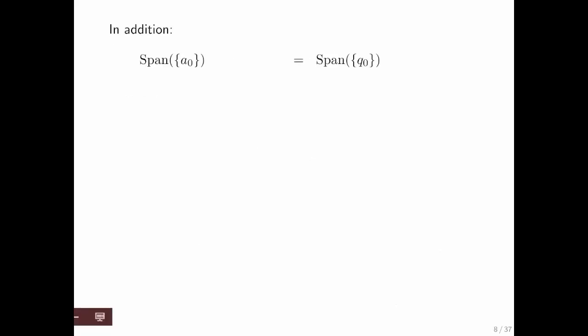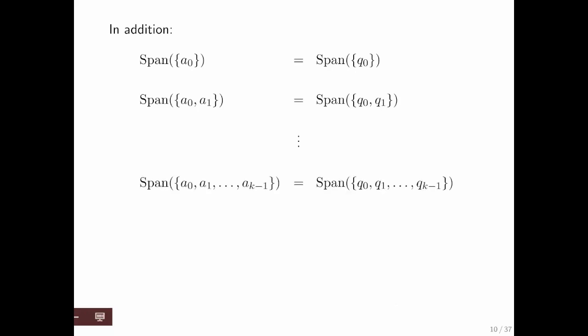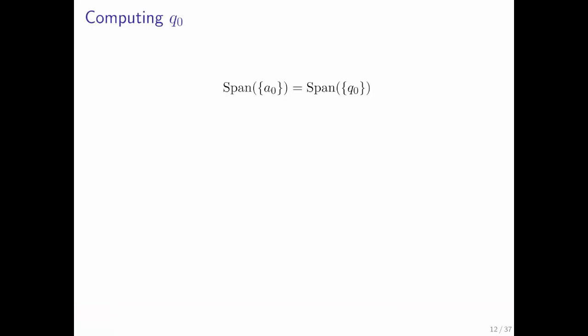In addition, we're going to expect the span of a0 to be the same as the span of q0, the span of a0 and a1 to be the same as the span of q0, q1, and so forth until we have n vectors. What does the fact that the span of a0 has to be equal to the span of q0 mean? It means that a0 must be some scalar multiple of q0; otherwise, it wouldn't be in the span of q0.